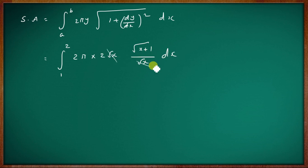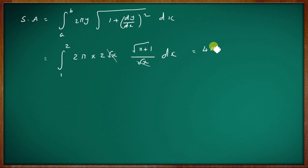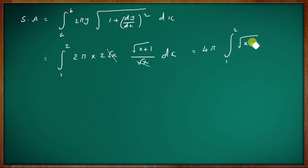We can cancel √x from numerator and denominator, giving 4π outside the integral from 1 to 2 of √(x+1) dx.